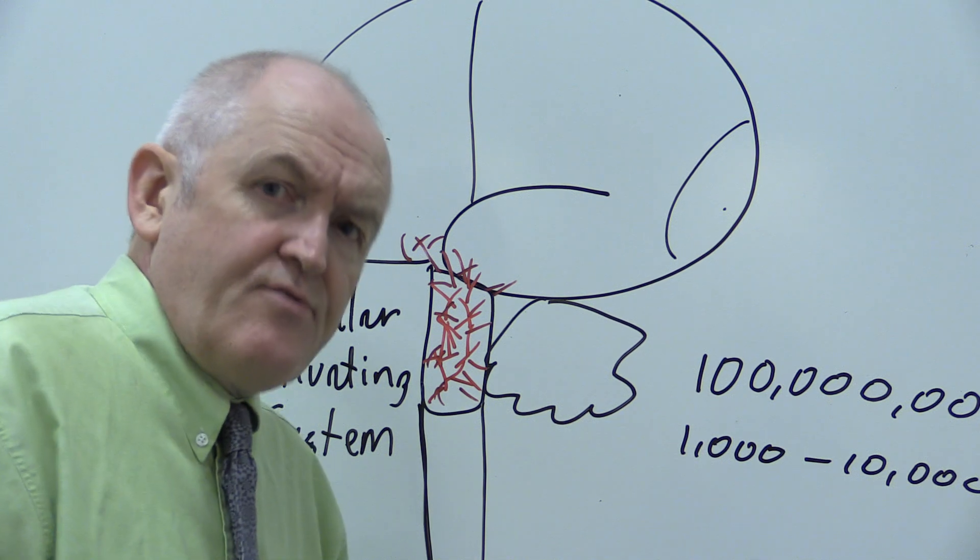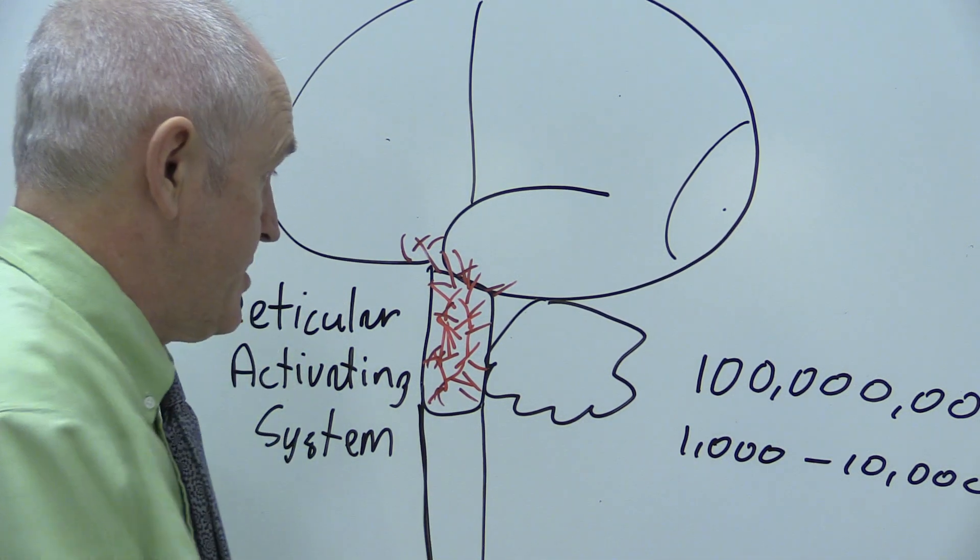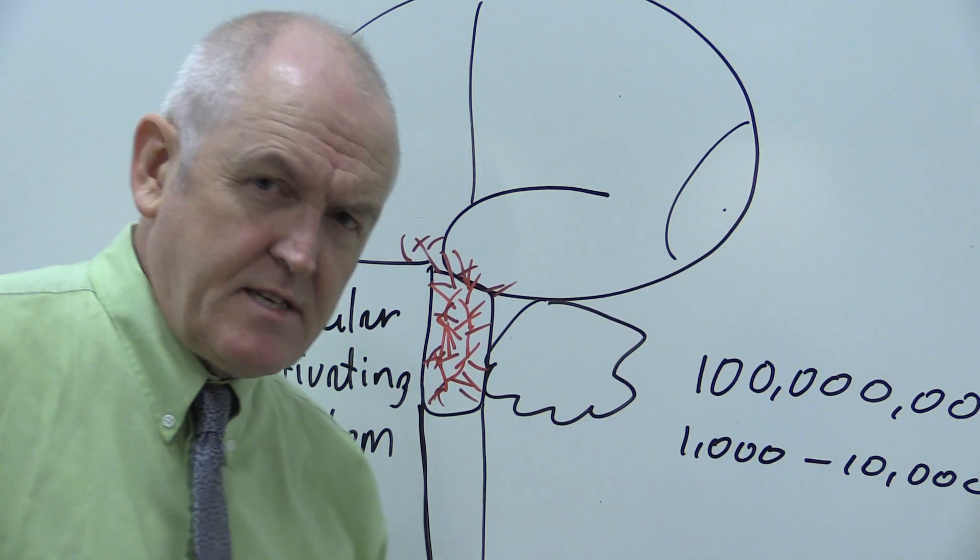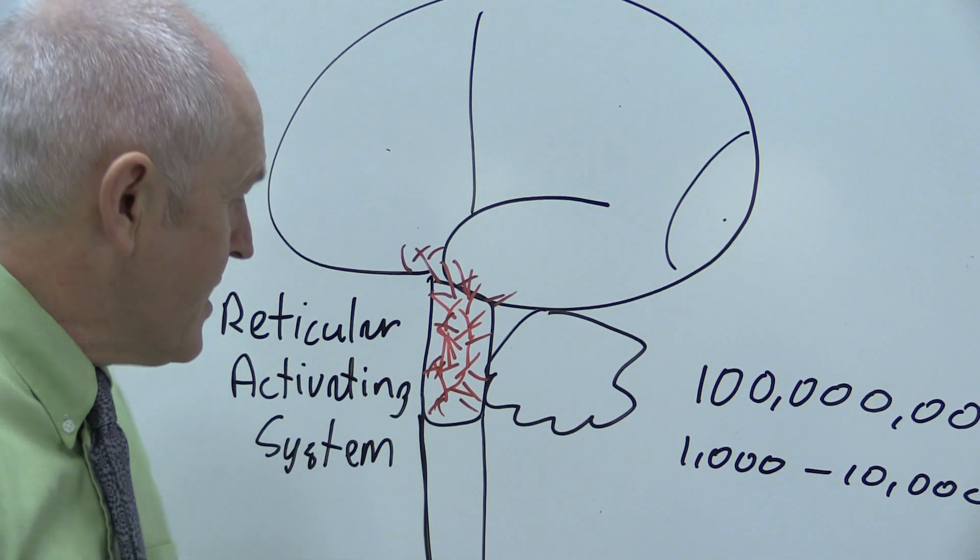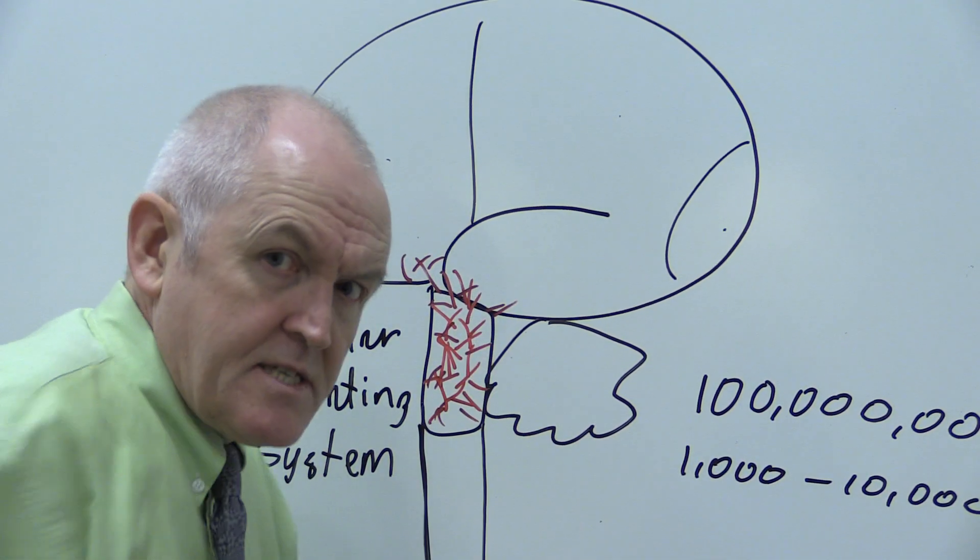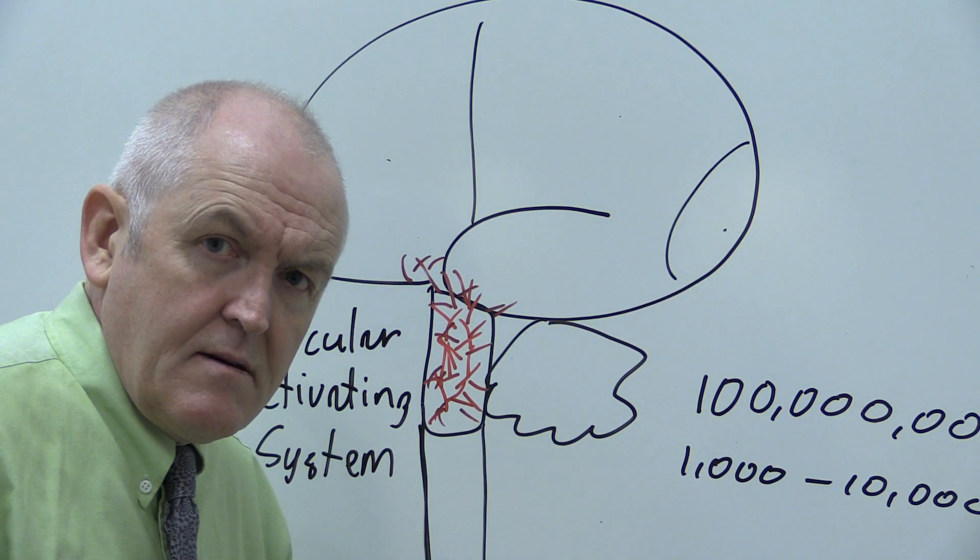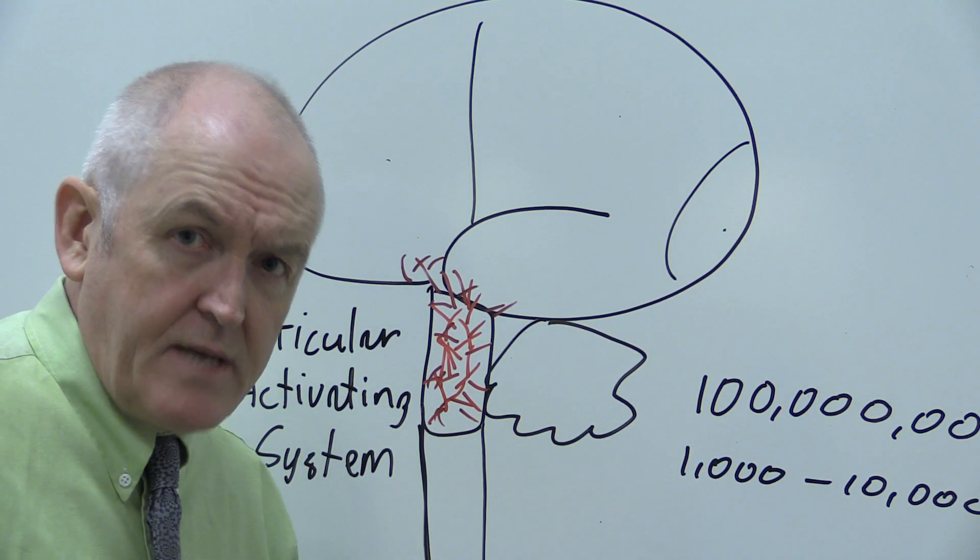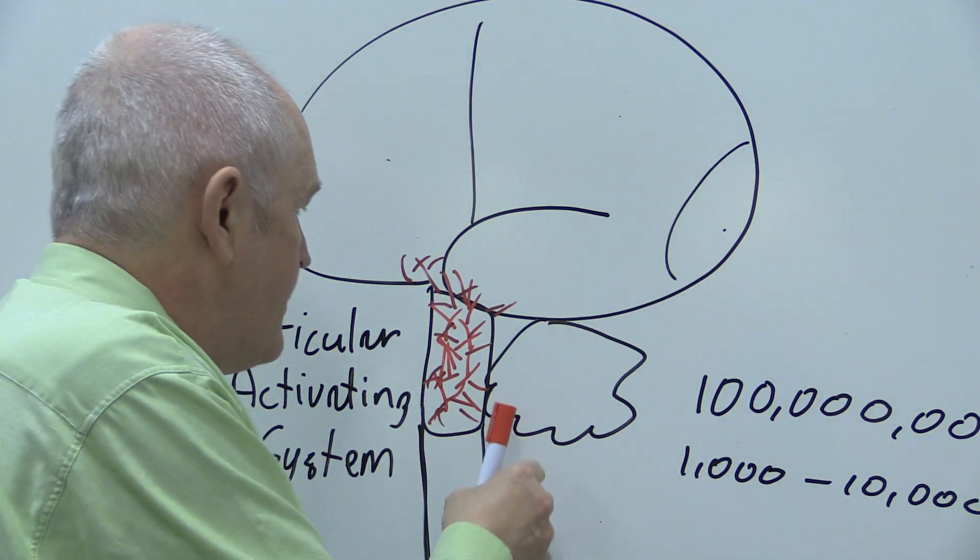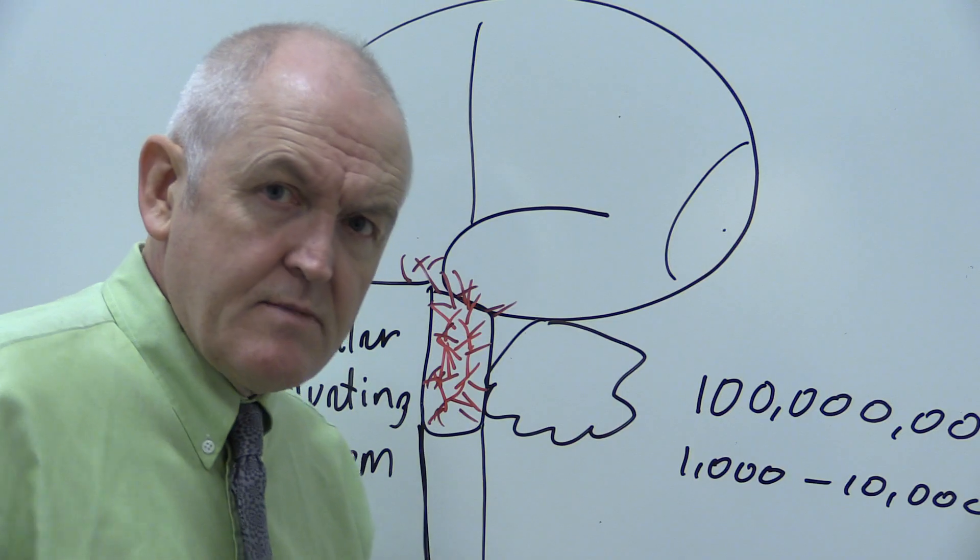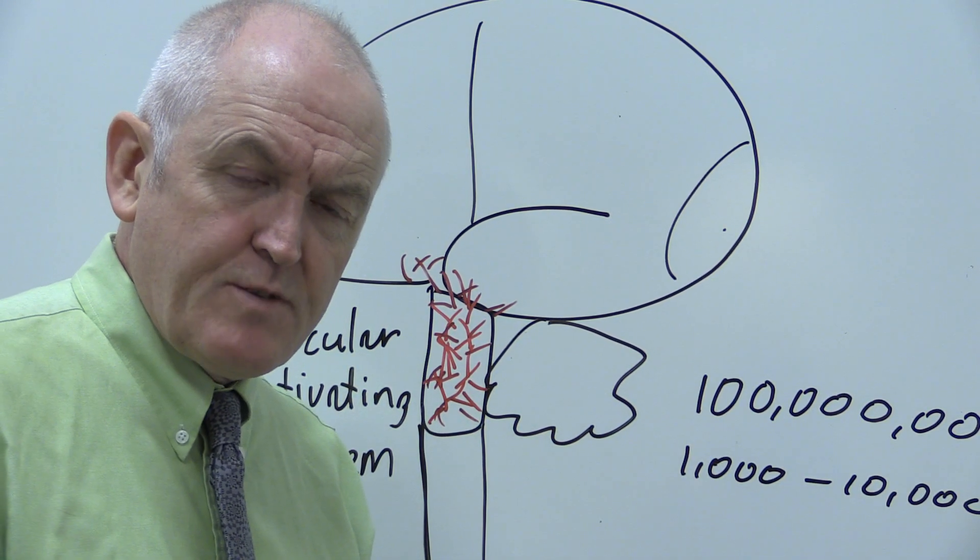So what is it that differentiates you from a tree? Well the answer is your consciousness generated by the reticular activating system. How it does that? No idea, but it does. And the reason I believe this is because I've seen many patients with brainstem death.